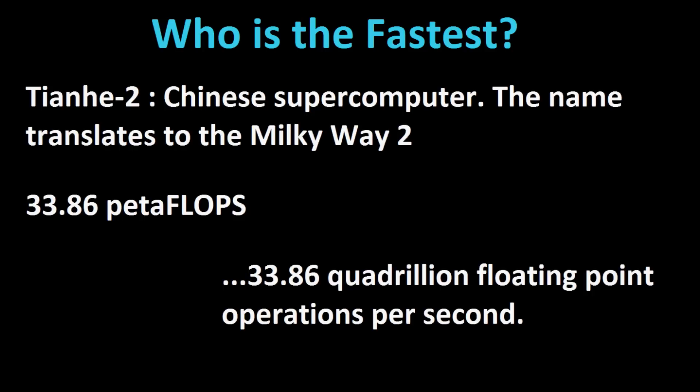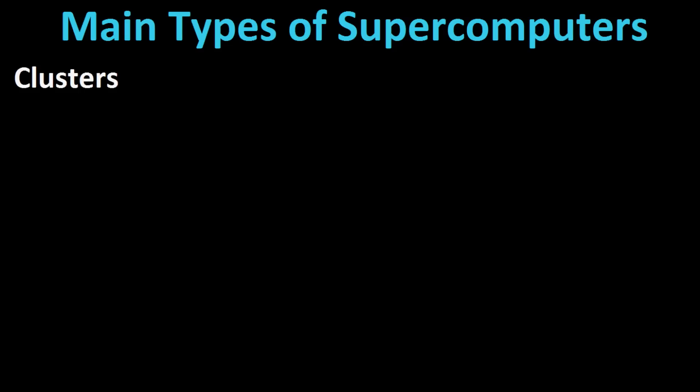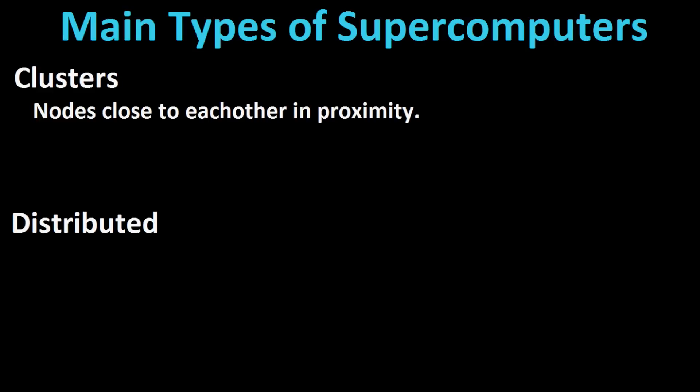So how do people build these things? Generally there are two types of supercomputers: clusters and distributed systems. Clusters are what you think of when you literally imagine a supercomputer — nodes that are really close to each other, usually in the same room. These are more efficient because there are fewer bandwidth and latency constraints slowing down data transfer, and they're generally structured specifically for the job of supercomputing.